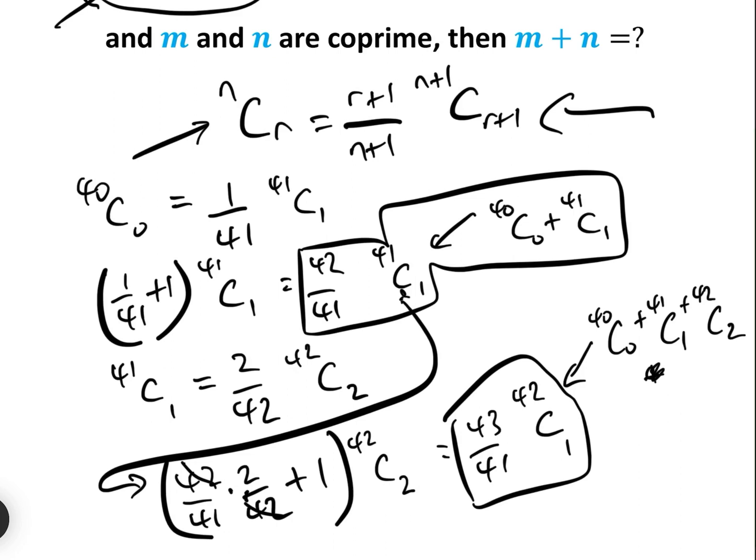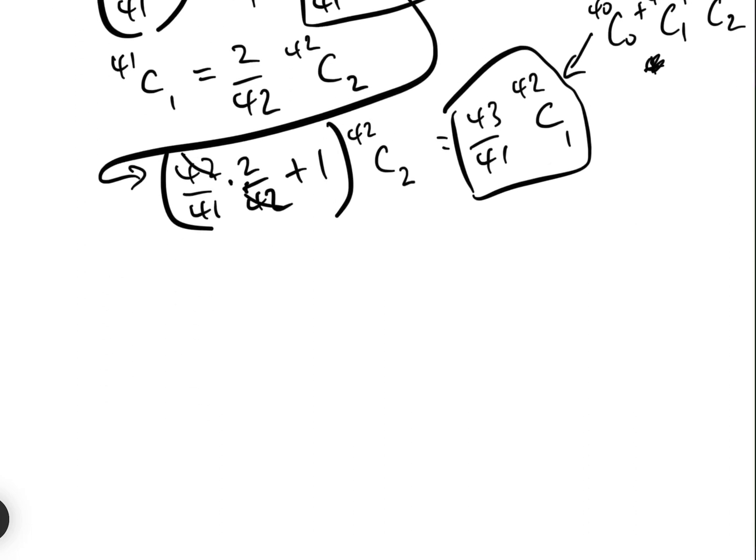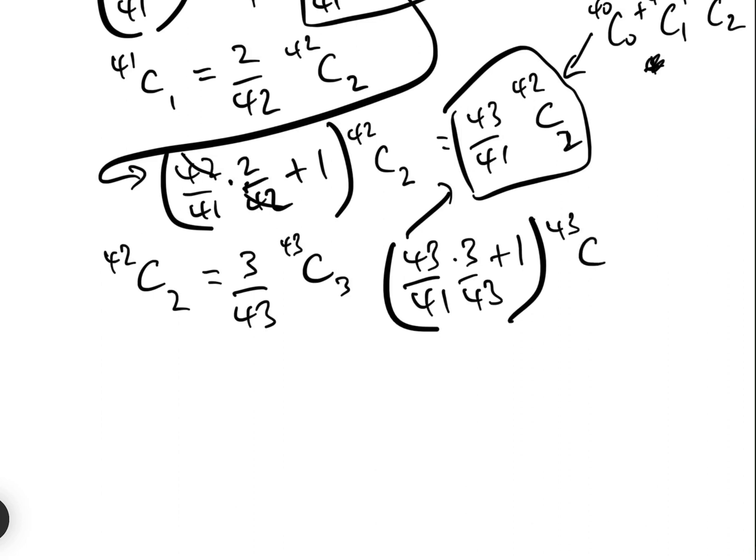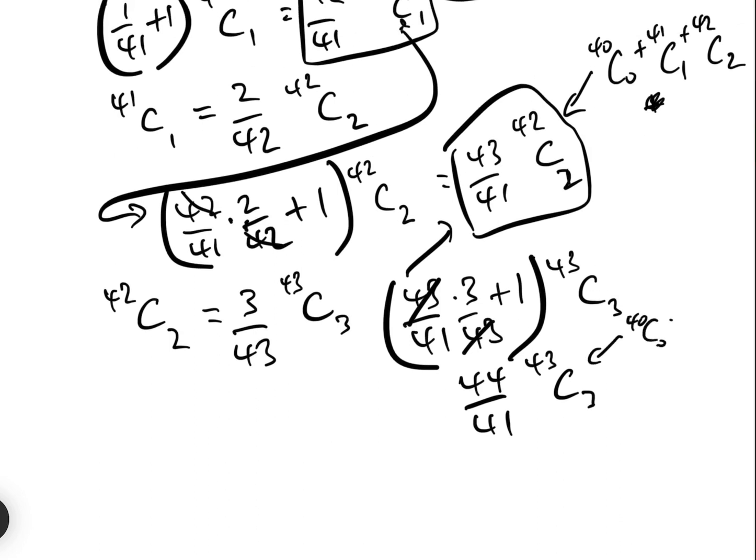You can already see a pattern emerging here in that 41C1 is equal to 42 over 41 times 41C1, is 43 over 41. Let's just do one more, let's do 42C2. Well, that equals 3 over 43 times 43C3. So how many 43C3s do we have? We have 43 over 41 times 3 over 43 add 1 times 43C3, and that cancels which gives us 3 over 41 add 1, which is now 44 over 41 times 43C3. That is equal to 40C0 add 41C1 add 42C2 add 43C3. You can see clearly now that we have the pattern that 43C3 is 44 over 41, 42C2 is 43 over 41, 41C1 is 42 over 41.